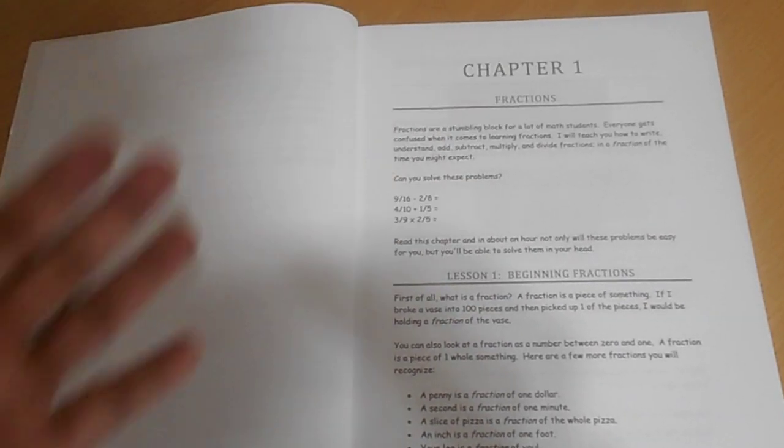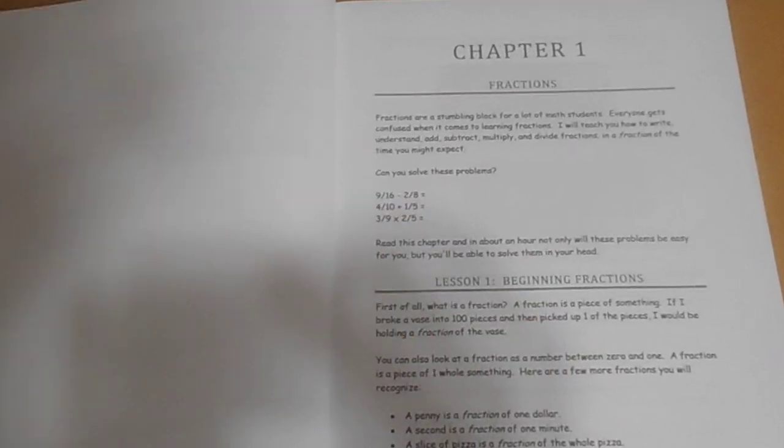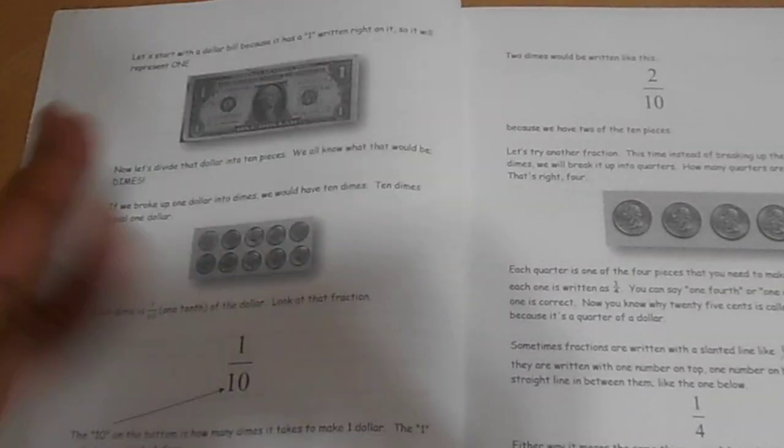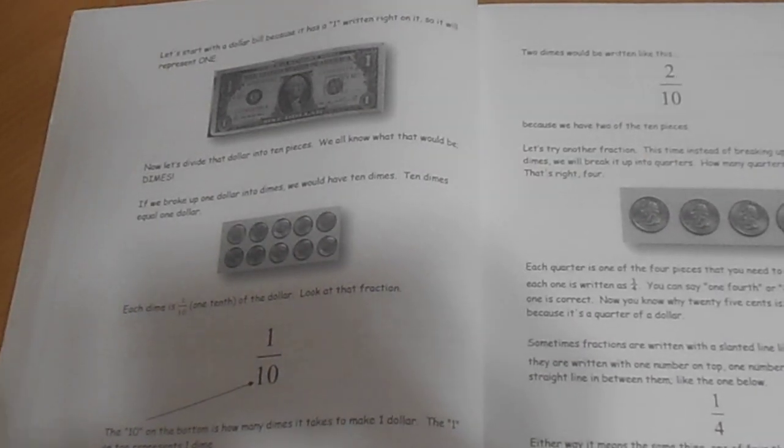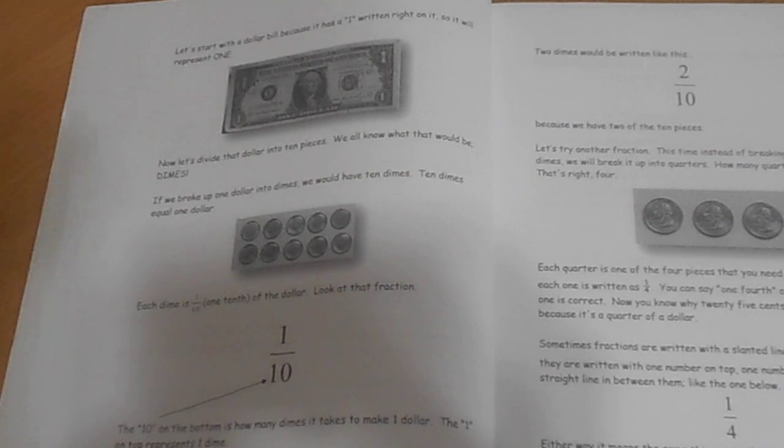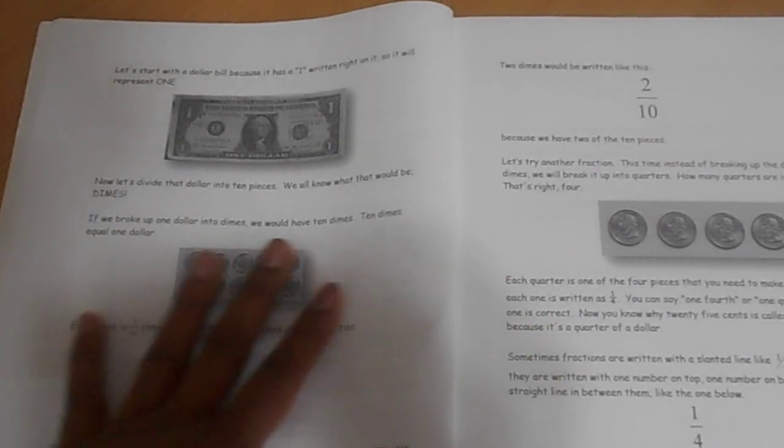So as you can see with Chapter 1, it's going to talk about fractions. Lesson 1 is going to break down and talk about beginning fractions. She gives explanations, gives examples, and she also gives you visual cues. So if you have a child that needs visual cues in order to understand stuff more fully, this book is a win-win because it has visual cues, explanations, examples, and also has the problems completely worked out in the back of the book.